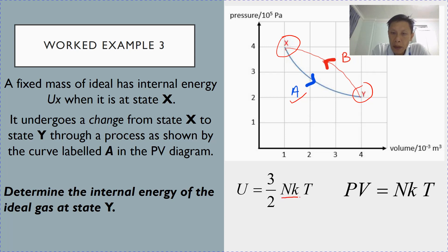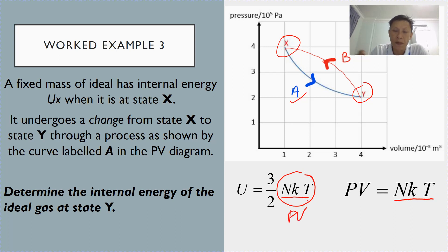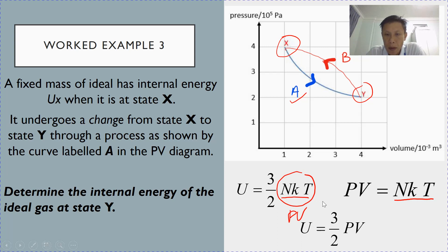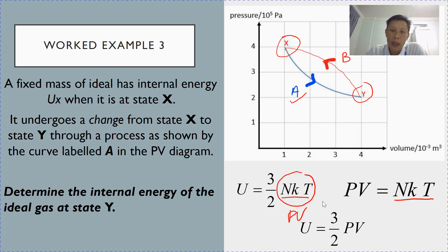How do we do that? If you look carefully, NKT appears in both expressions. So we can replace NKT with PV. So we get the expression: internal energy is 3/2 PV. In other words, internal energy is directly proportional to pressure and also directly proportional to volume.